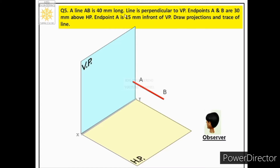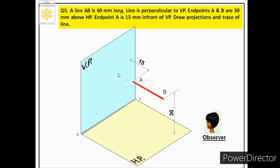Line AB is perpendicular to VP, so it is shown perpendicular to VP here. Both endpoints A and B are shown at 30 mm from HP. Endpoint A is 15 mm in front of VP. Note that only the distance of A from VP is given; the distance of endpoint B from VP is not given.